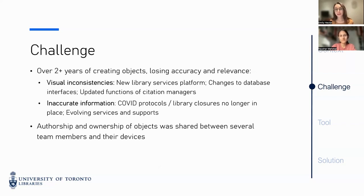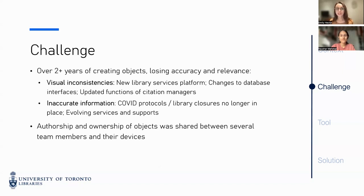These new learning objects quickly became important components of our instructional program — we used them to bolster our Zoom instruction with pre-work opportunities, provide another touchpoint for students we might not meet in class, and offer self-serve reference materials when needed. However, we soon learned that these objects, despite their utility, also provided us with a new challenge: keeping them consistently up to date. Even within the first year of creating and distributing these resources, we experienced changes in our library system, public health circumstances, and library policies — changes that needed to be reflected in our online learning objects. In particular, changes to the U of T library website, database interfaces, and citation managers created visual inconsistencies. Additionally, our public health precautions were gradually phased out, leaving our learning objects with inaccurate leftover information about library closures and reduced services.